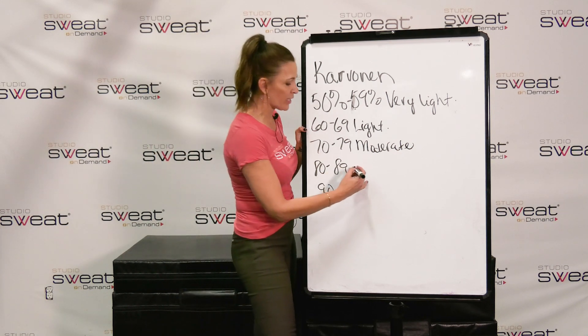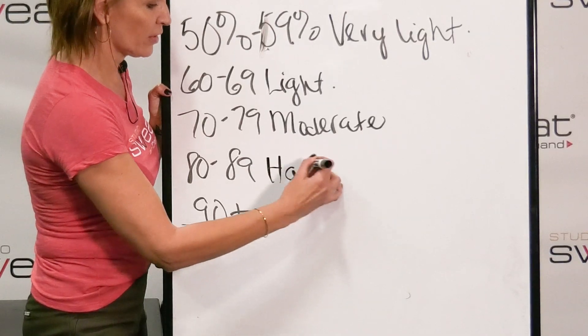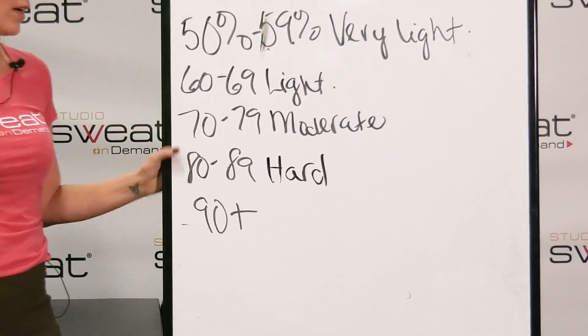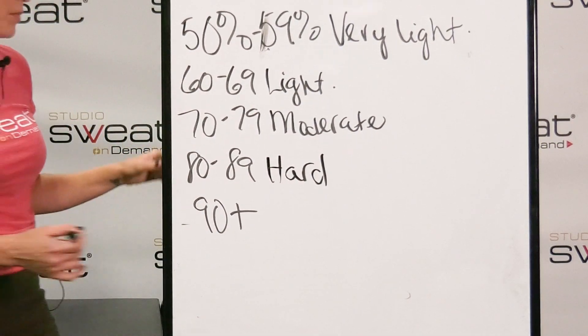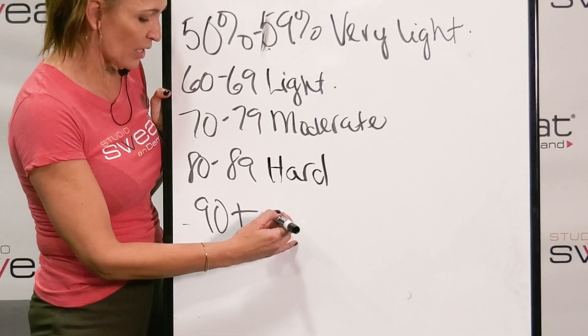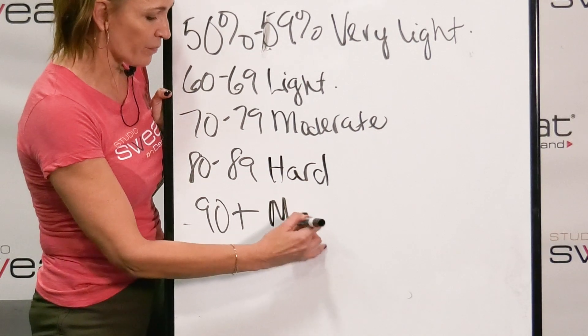Zone four is 80 to 89% — that's hard, pretty intense stuff. And then 90% plus is going to be maximum.